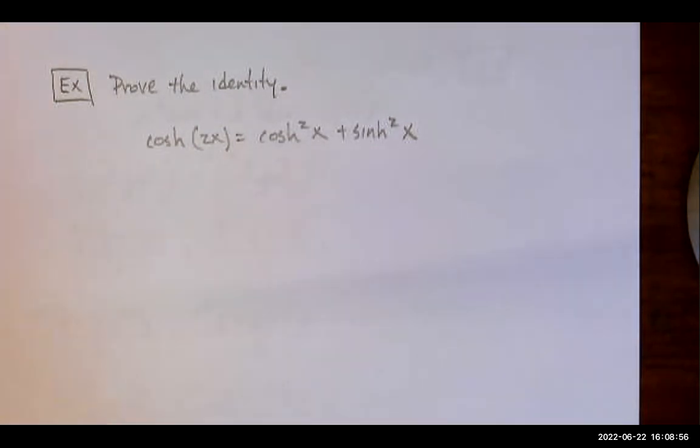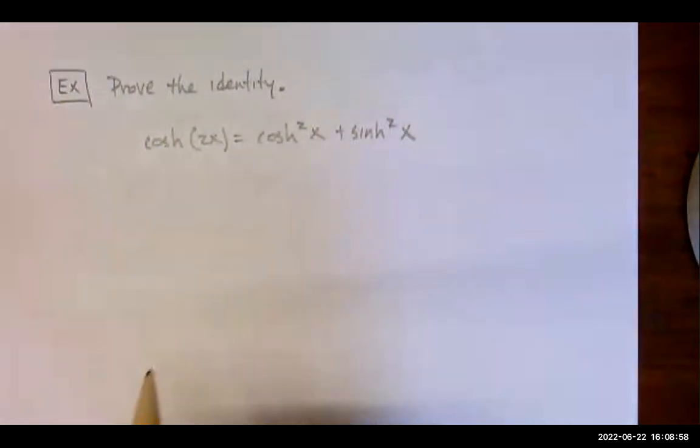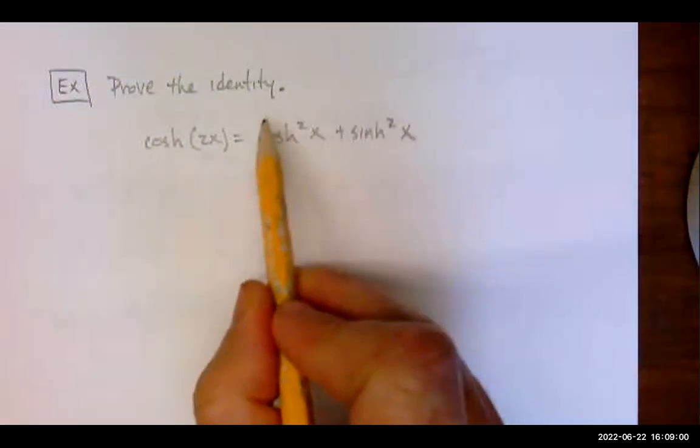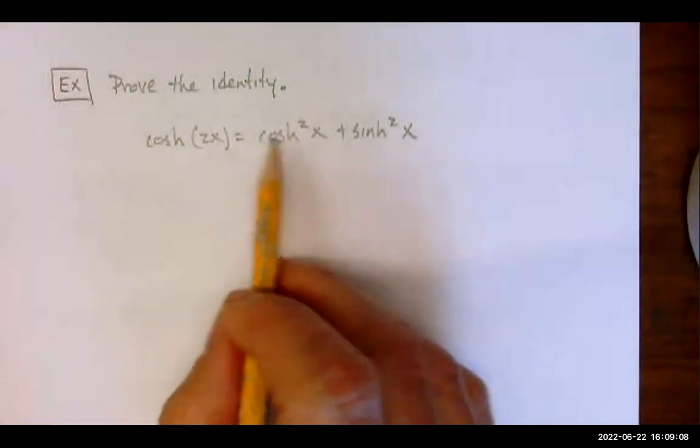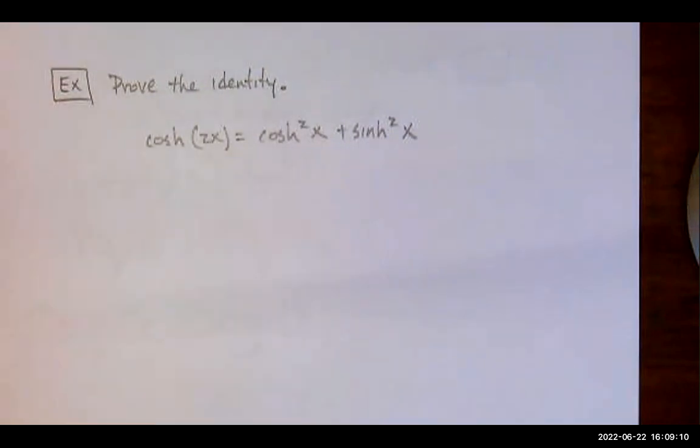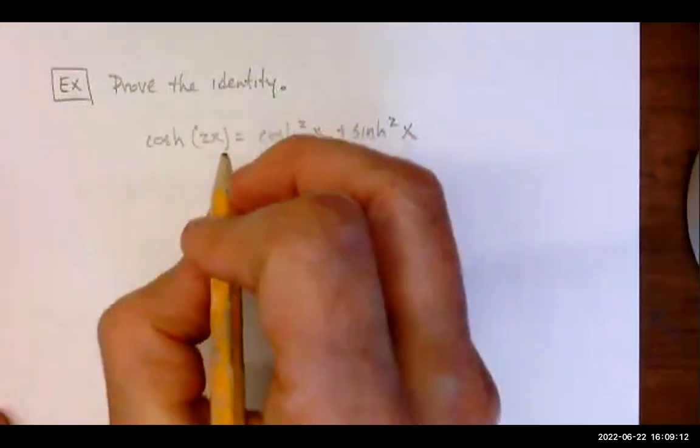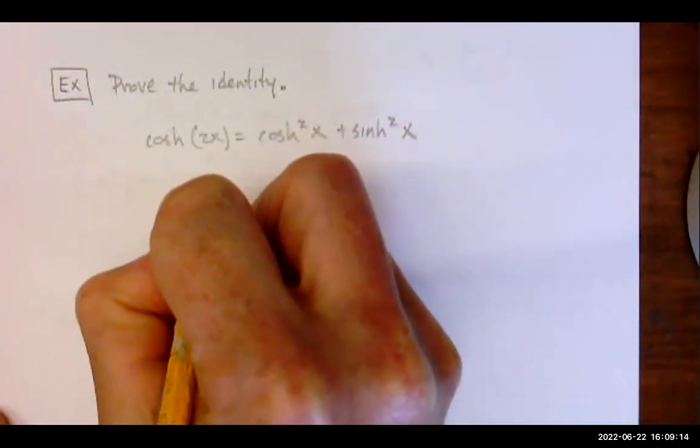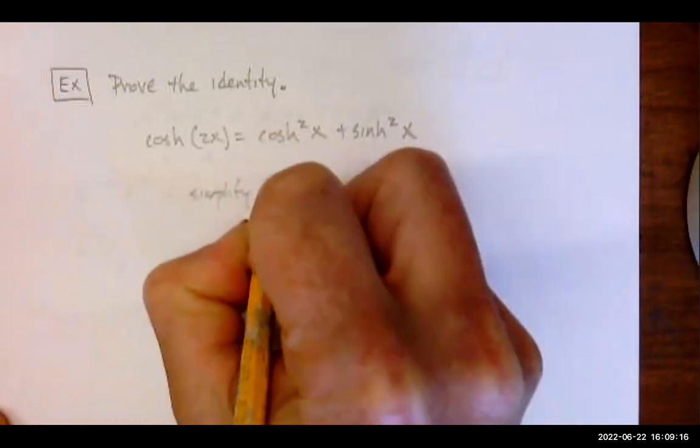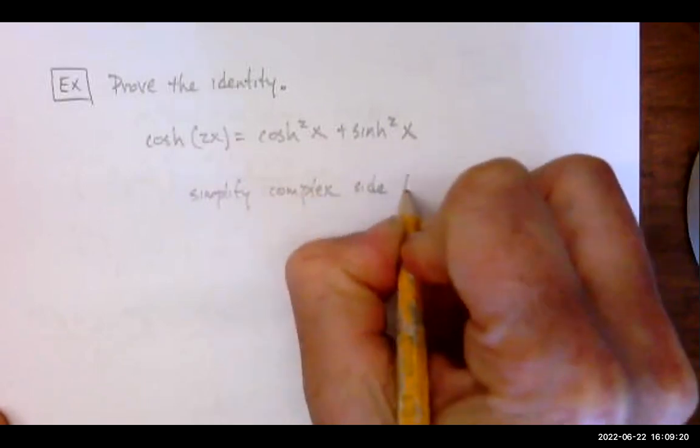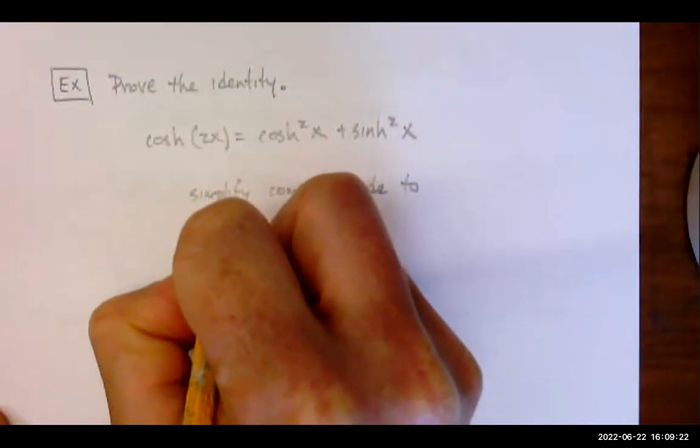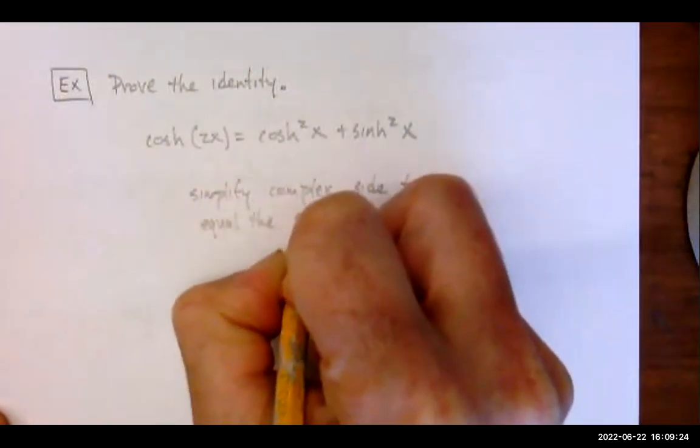So what I want to do is I want to pick the more complex side. Here, the more complex side would be the right side. I want to take the more complex side, and I want to work with it, do a bunch of algebra until I get the simpler side. Okay, so I'm going to simplify the complex side to equal the simpler side.